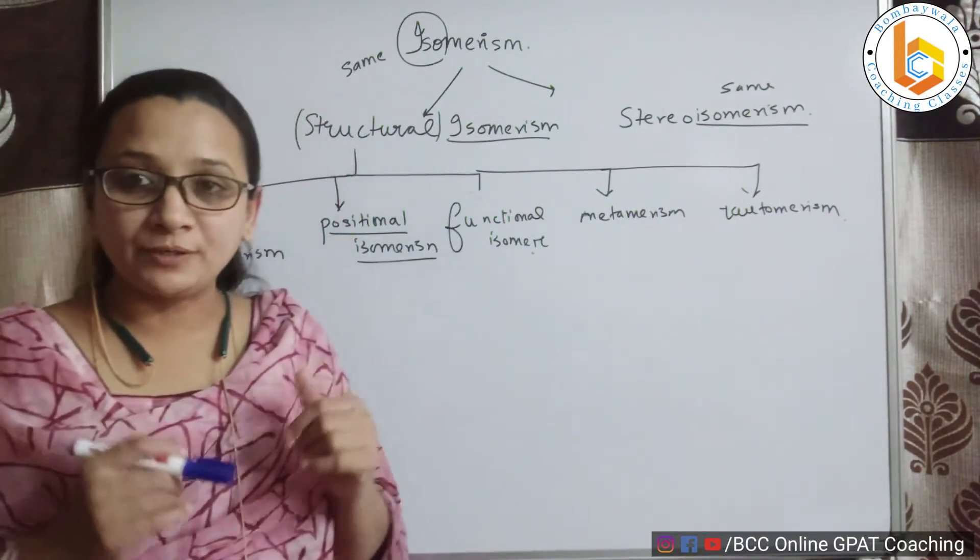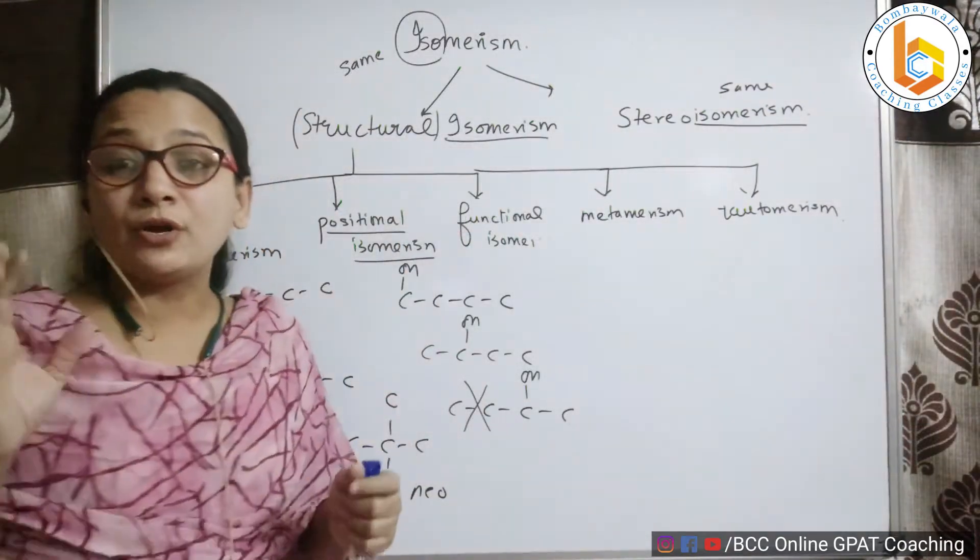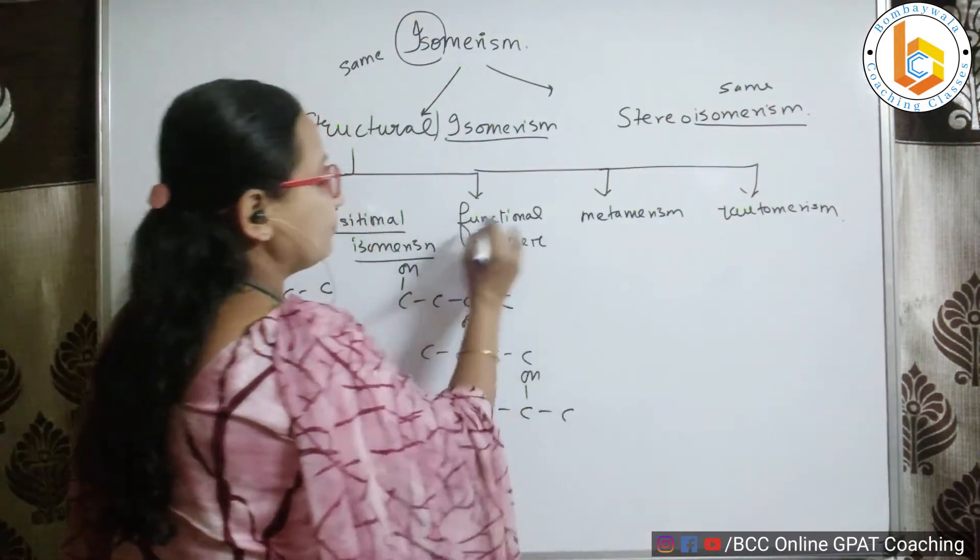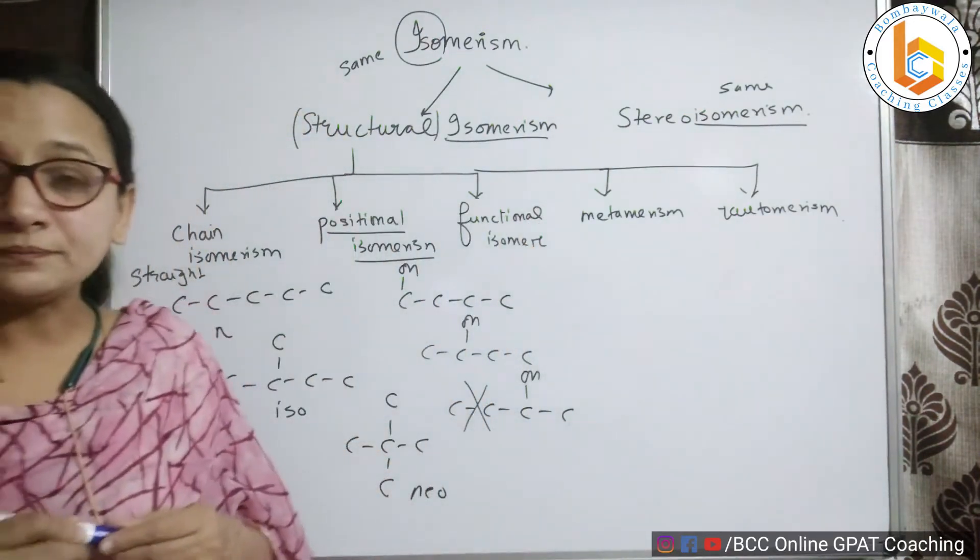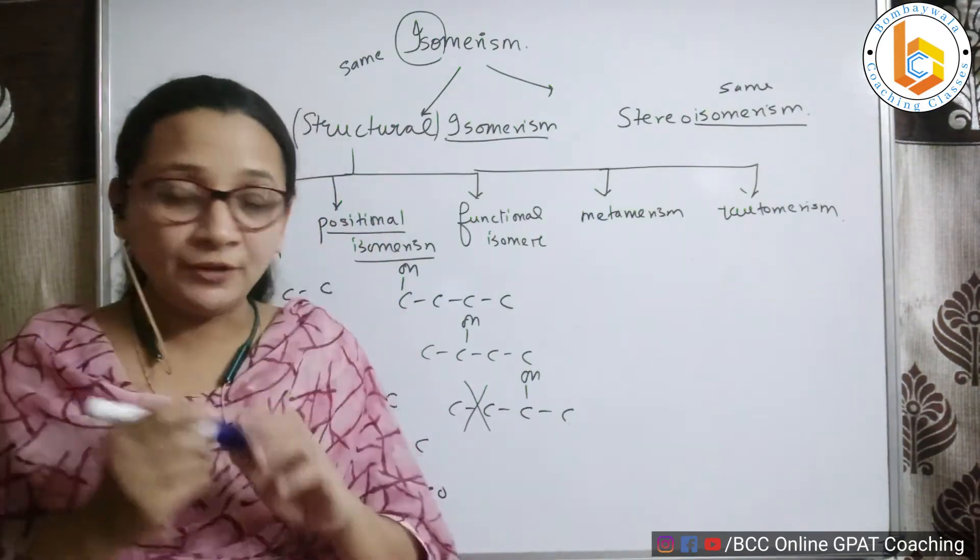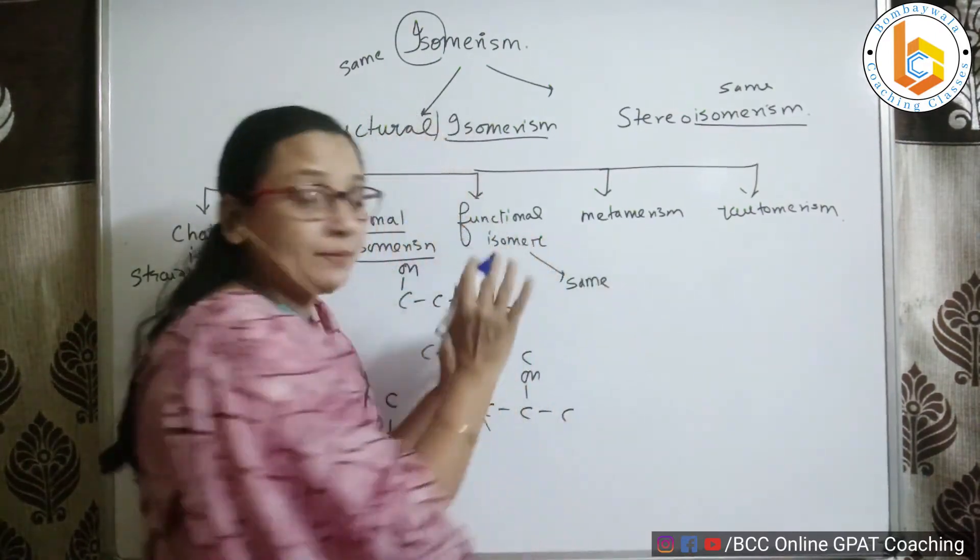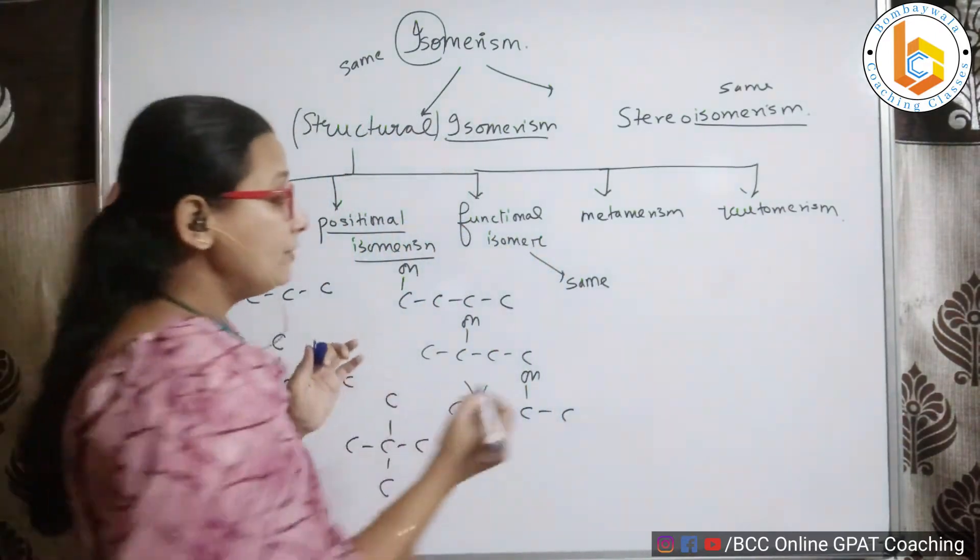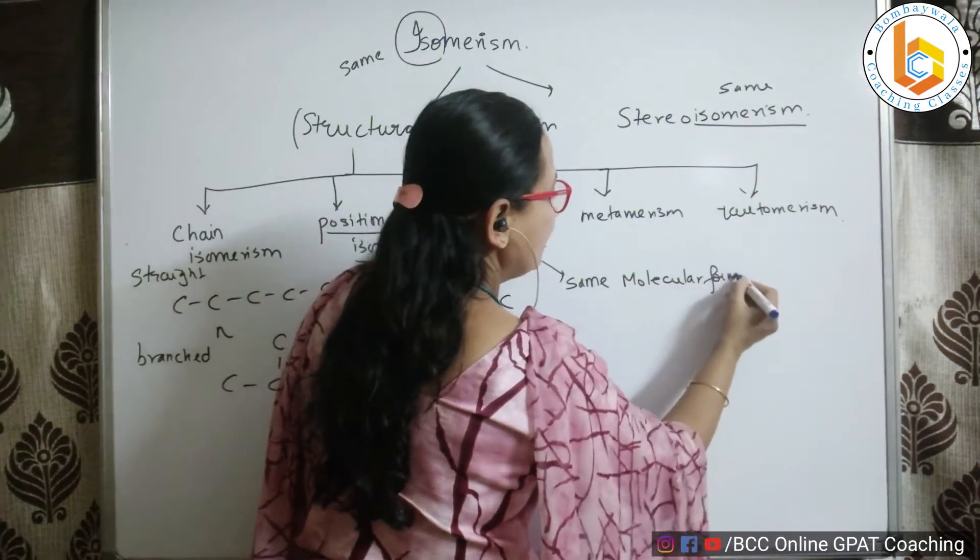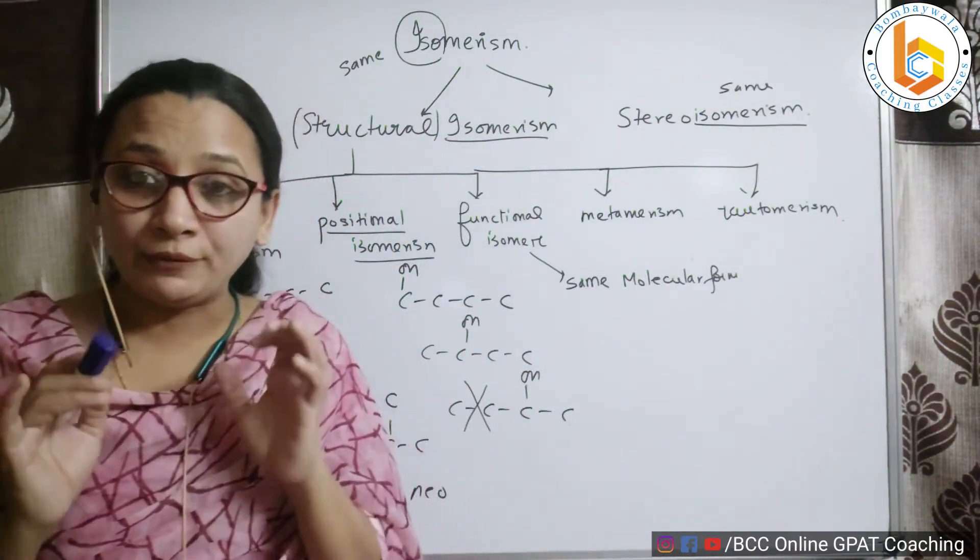Let us start with our topic. The third one is called functional isomerism. Many times students get confused with this. These are those functional groups which can be interconvertible. They have the same molecular formula, of course, but the structural formula is slightly different.